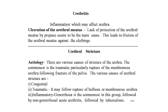Next point: urethritis. There are various types of inflammation which may affect the urethra. Ulceration of the urethral meatus in male children is particularly seen after circumcision, occurring about 6 to 18 months after the operation. Lack of protection of the urethral meatus by the prepuce seems to be the main cause, leading to friction of the urethral meatus against clothing.